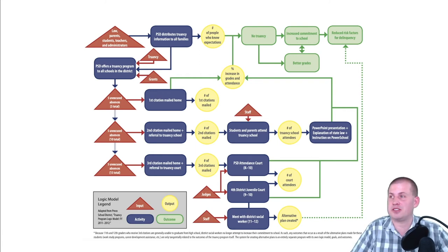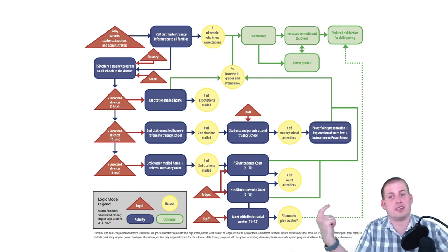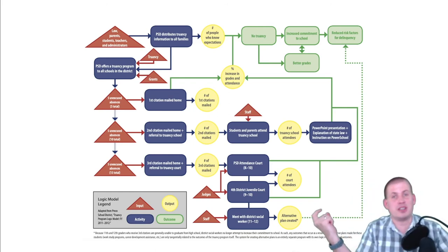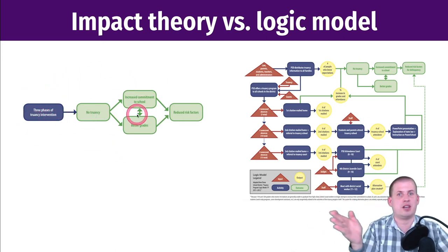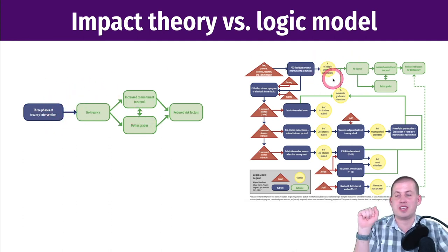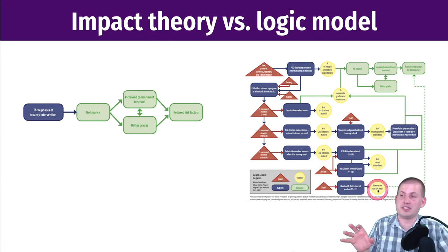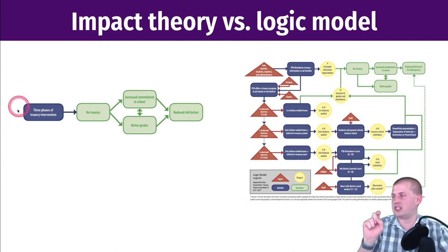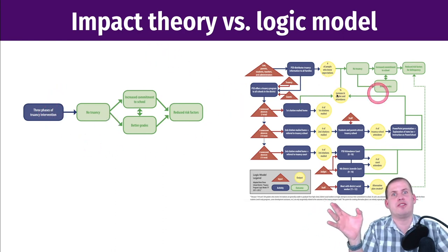A common question is: what is the difference between a logic model and an impact theory? An impact theory links your whole program to the outcomes you care about — you're just saying the program causes stuff to happen and you're interested in that one arrow. A logic model is far more complex. The entire 'program' box in an impact theory is really all of the inputs, activities, outputs — all of that detail is essentially collapsed into one little square in the impact theory.